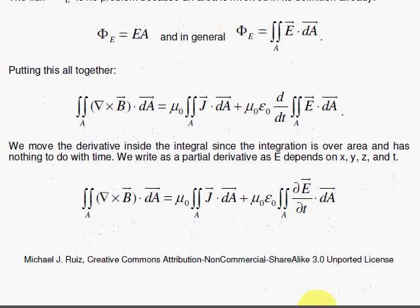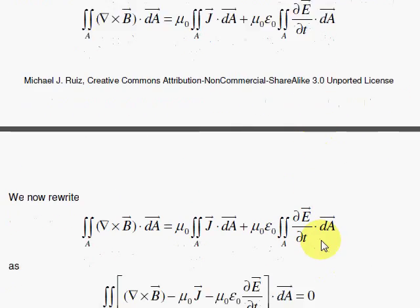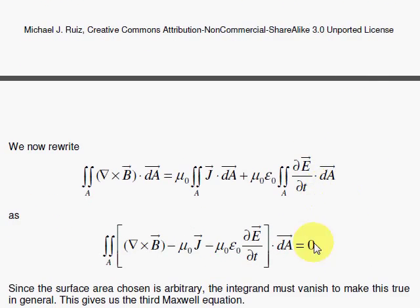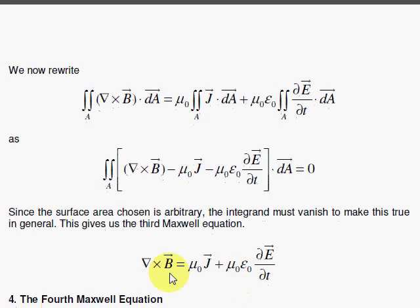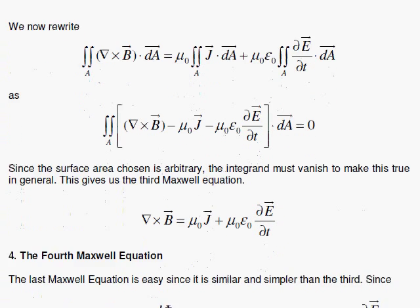We bring everything to one side of the equation with a minus sign, set it equal to zero, and use the arbitrary area argument — meaning the integrand must vanish at all times — and that gives us the third Maxwell equation in differential form.